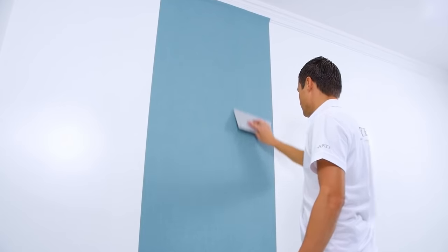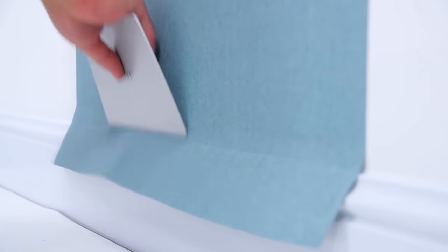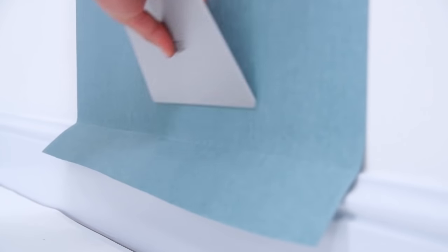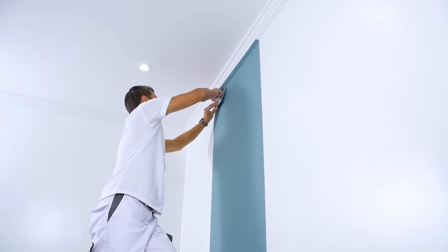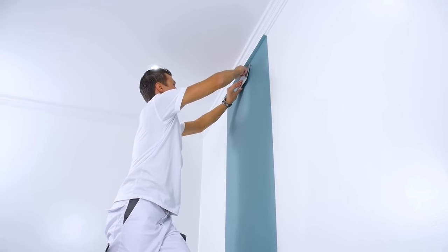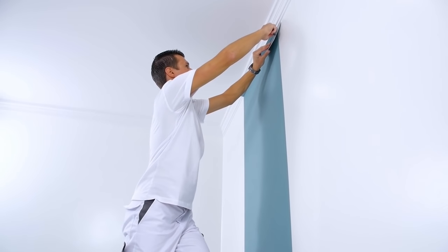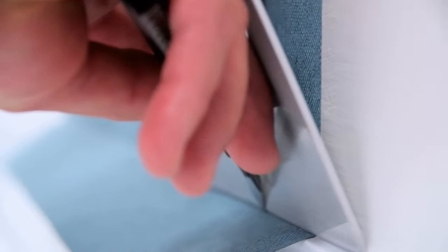Press gently with the spatula and remove any bubbles. Press the wall covering well onto the wall at the top and bottom. Hold the snap-off cutter against the spatula and cut off the surplus paper. Always use a sharp blade. Preferably use a new piece of the snap-off cutter blade for each cut.